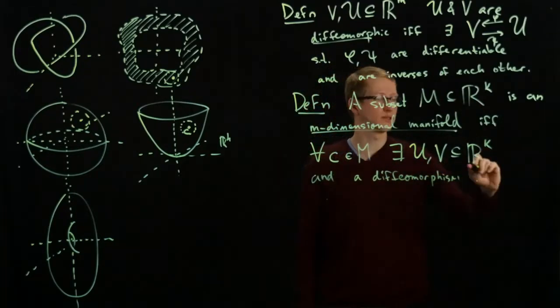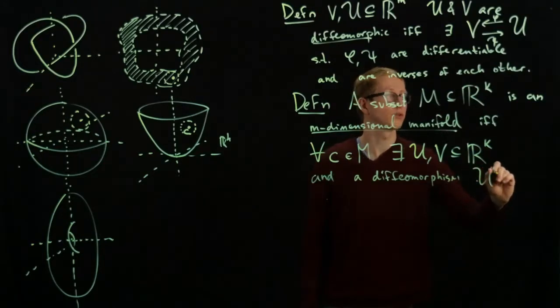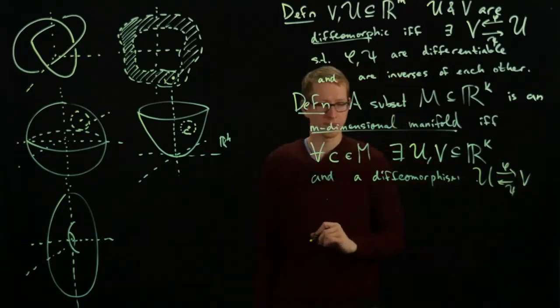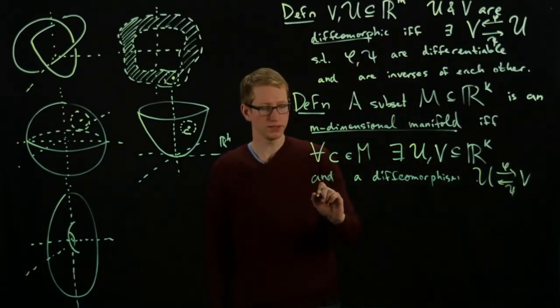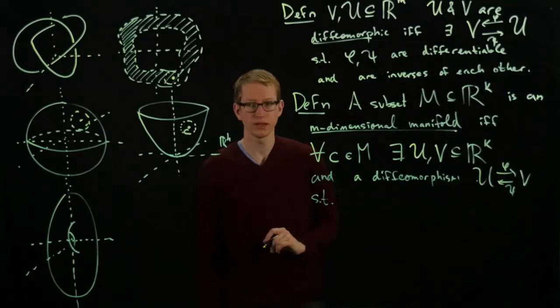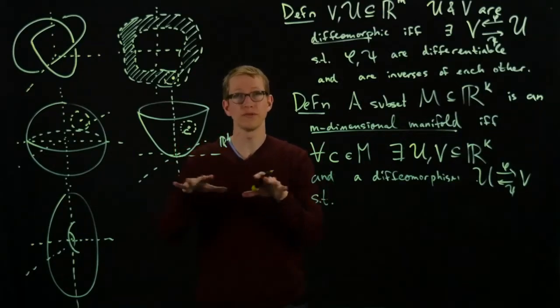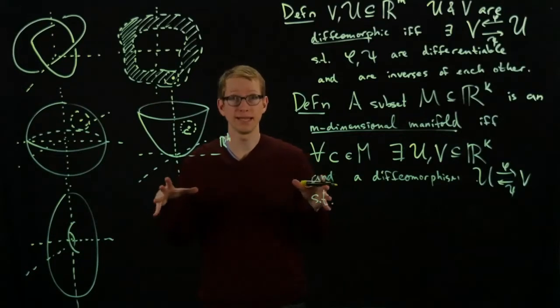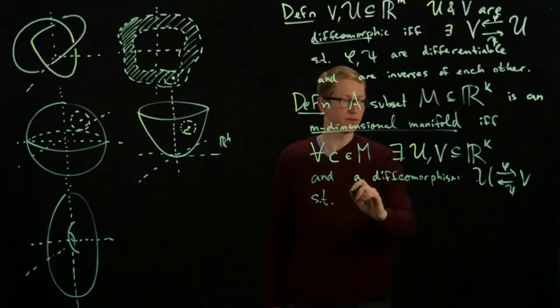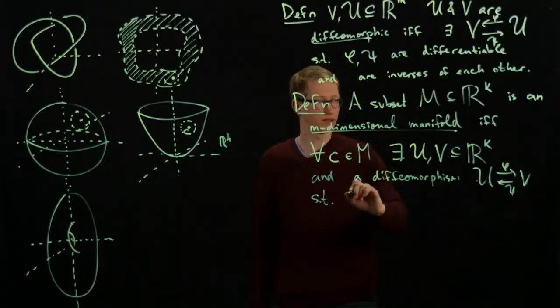And let's try to use the same notation we have here, so U and V, such that, and what we want to do is we want to relate this surface to something more familiar, for instance, a plane.